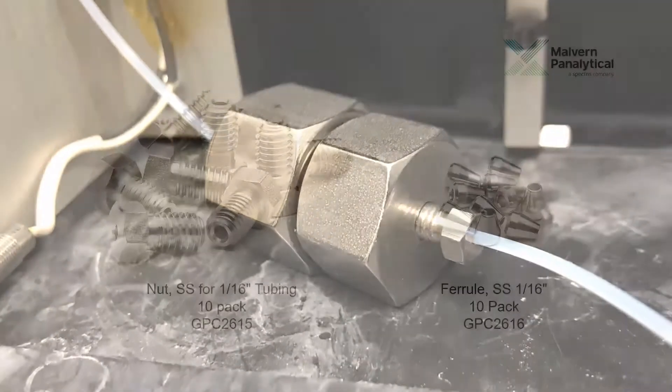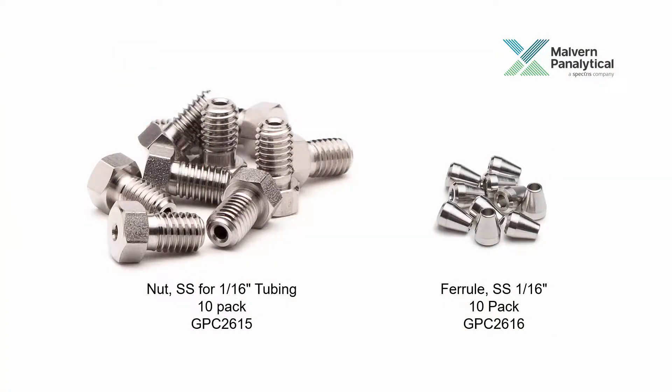Most of these connections utilize a nut and ferrule fitting on the end of a piece of tubing that secures into a specifically shaped socket to minimize dead volume.